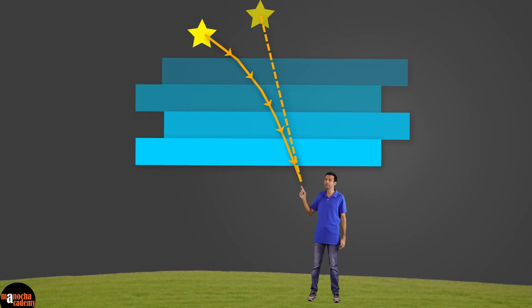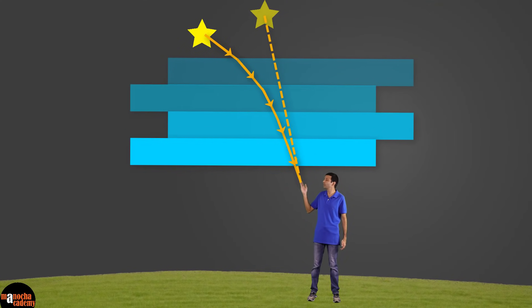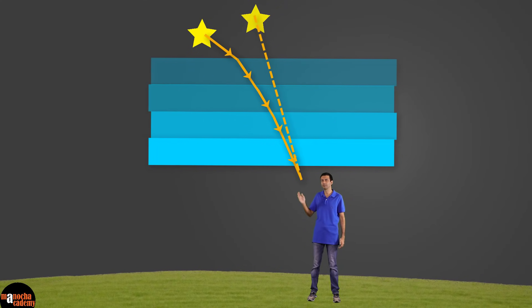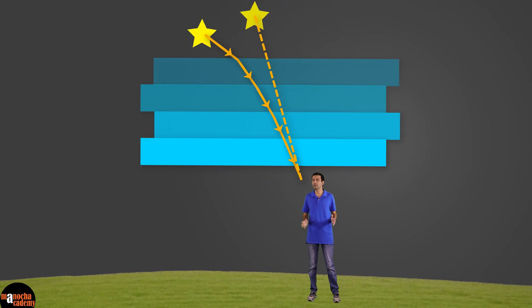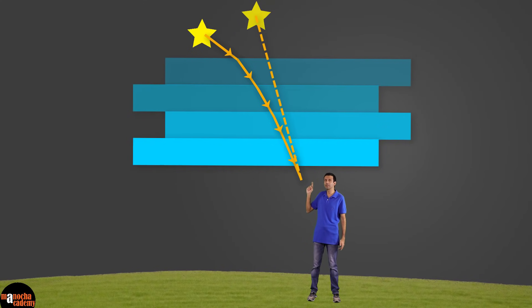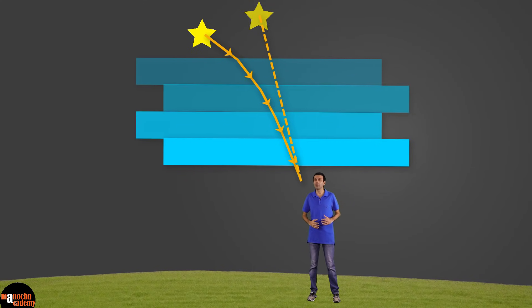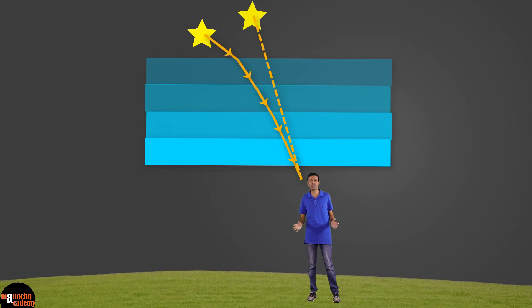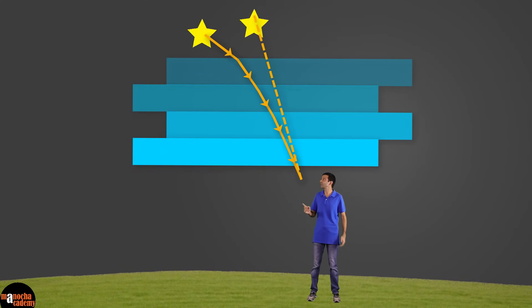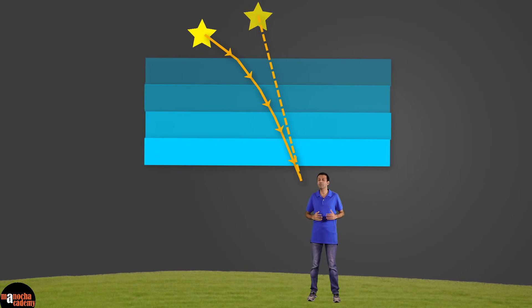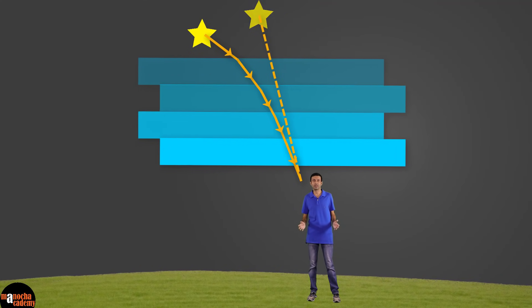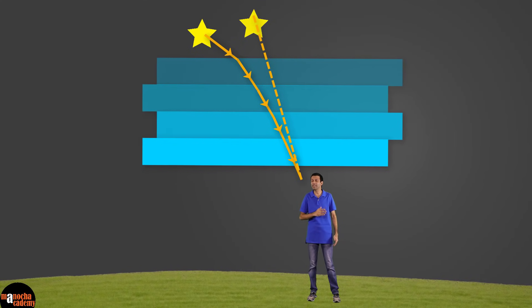So the refraction of light is continuously changing, and the apparent position of the star keeps fluctuating. The path of light coming from the star is constantly changing, and so the amount of light that enters our eyes keeps changing. As a result, the star appears brighter sometimes and sometimes dimmer to us. This bright-dim, bright-dim effect makes us think that the star is twinkling.